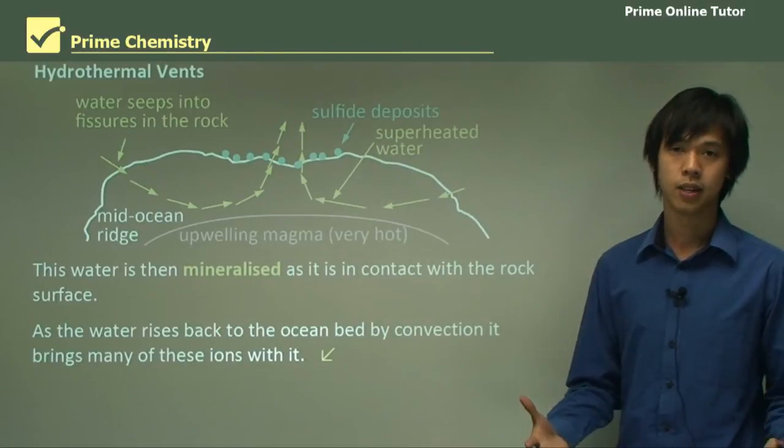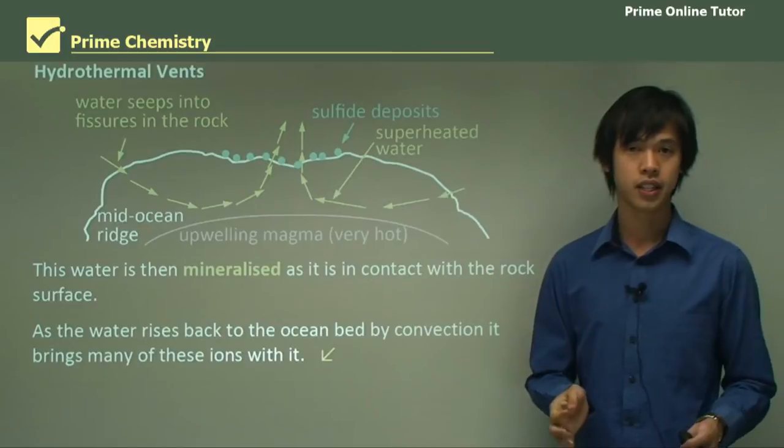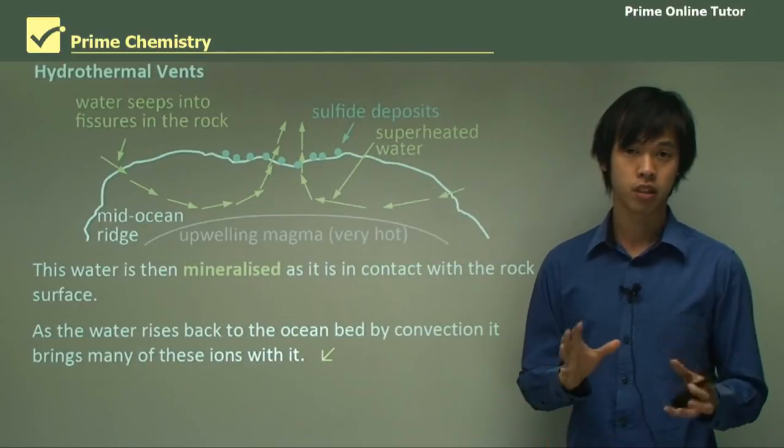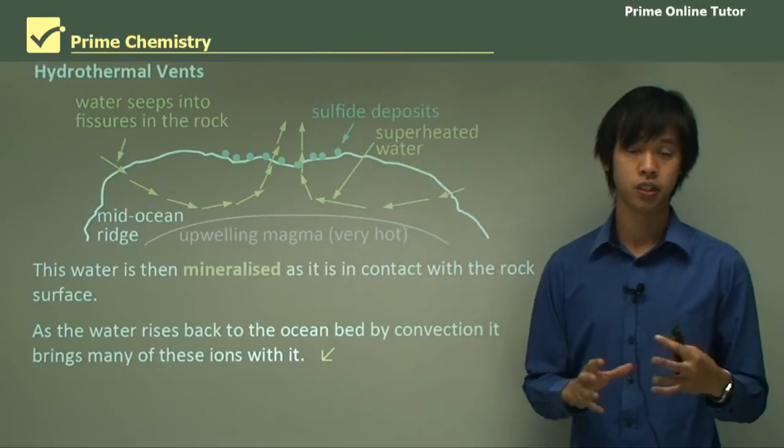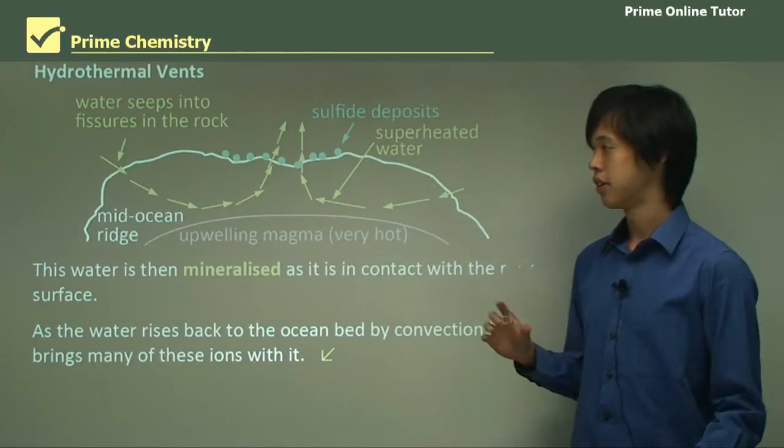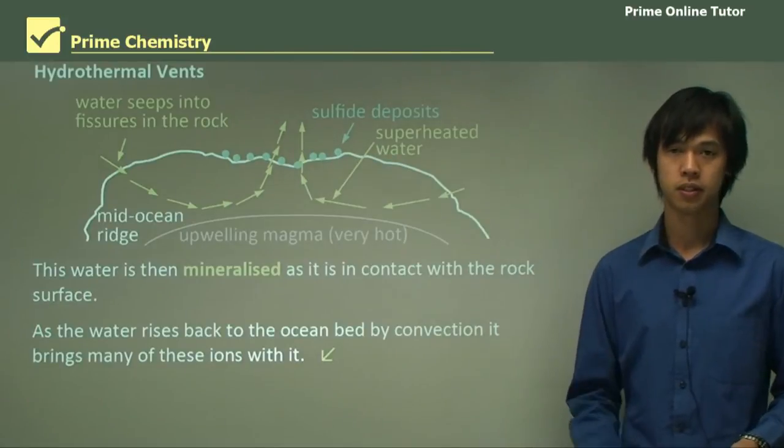So that's how hydrothermal vents work. That concludes today's lesson on the ocean as an electrolyte. We looked at what is actually the composition of the ocean and where do these ions actually come from. We'll move on to the question segment now.